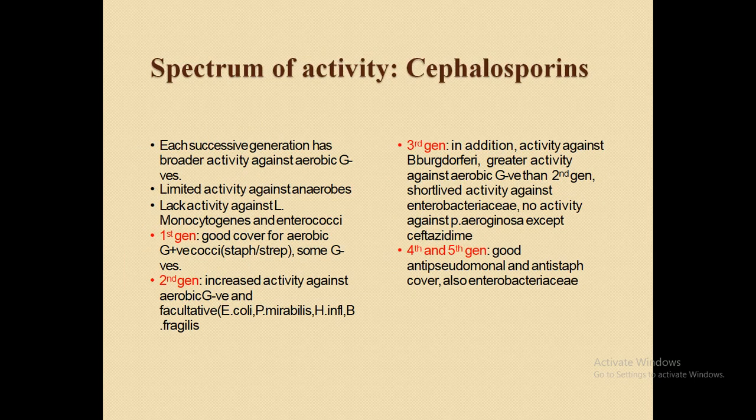Now the spectrum of activity of cephalosporins. Each successive generation has broader activity against aerobic gram-negative organisms. There is limited activity against anaerobes and they lack activity against Listeria monocytogenes and enterococci. First-generation cephalosporins provide good coverage for aerobic gram-positive cocci like streptococci and staphylococci, and some gram-negative organisms.